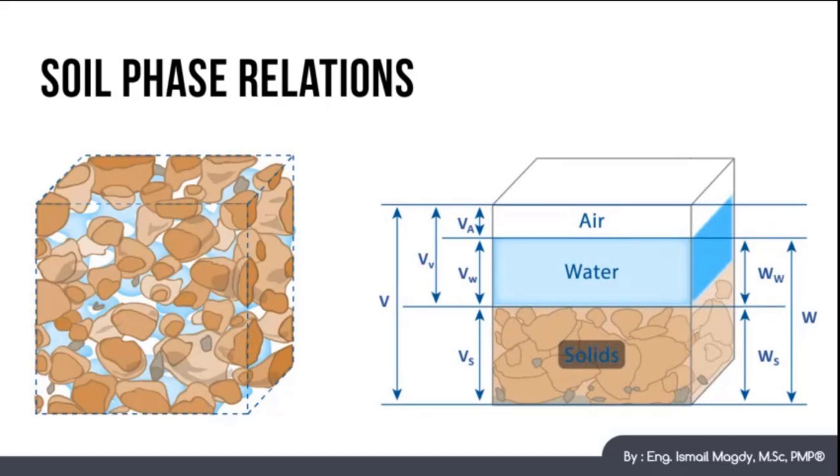If we consider the solids volume to be Vs, water volume to be Vw, and air volume to be Va, it means that the void total volume will be Vv which equals Va plus Vw. While if we consider solids weight to be Ws and water weight to be Ww, then the total weight of the soil sample will equal Ws plus Ww which is W.